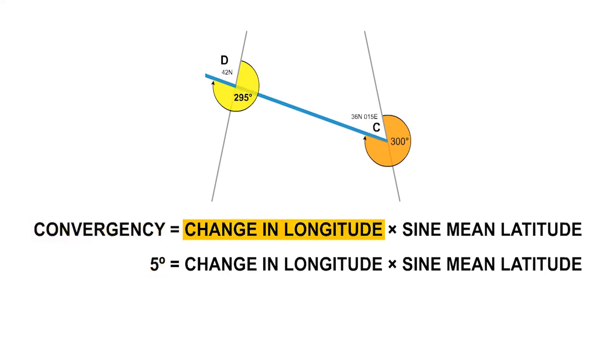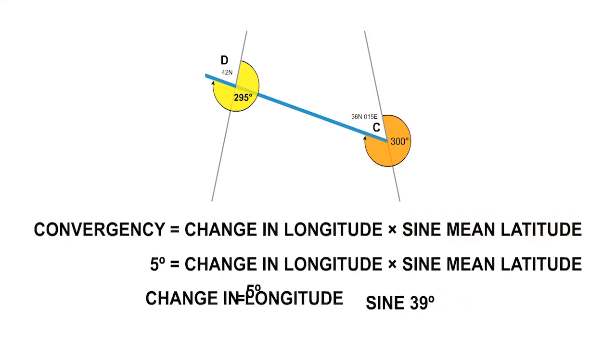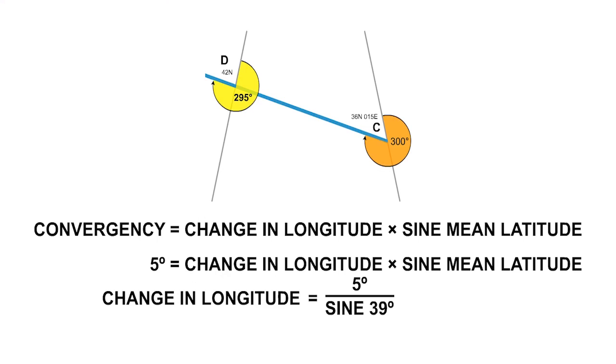Do we know the change in longitude? No, that's what the question is asking. Do we know the mean latitude? Yes, we do, because they've given us the start and finish latitude. It's halfway between 36 and 42 north. It's 39 north. Rearrange the equation to make the change in longitude the subject. And you get the answer that the change in longitude is about 8 degrees.